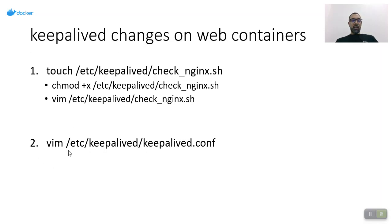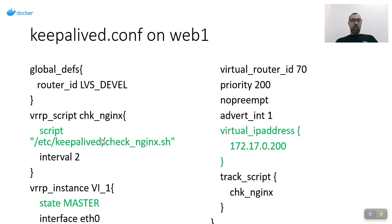For the keepalived configuration on web1: I defined global_defs with router_id LVS_DEVEL, then used a vrrp_script named check_nginx pointing to the script I created, with an interval of two seconds. For the vrrp_instance, the initial state is MASTER, it listens on eth0, virtual_router_id is 70, priority is 200, and the virtual IP address is 172.17.0.200. The tracking script used is check_nginx.